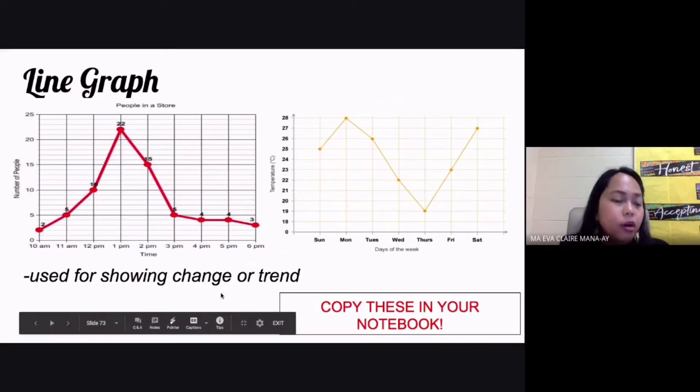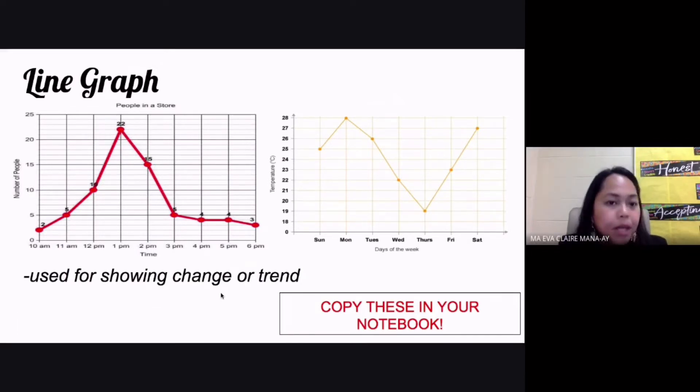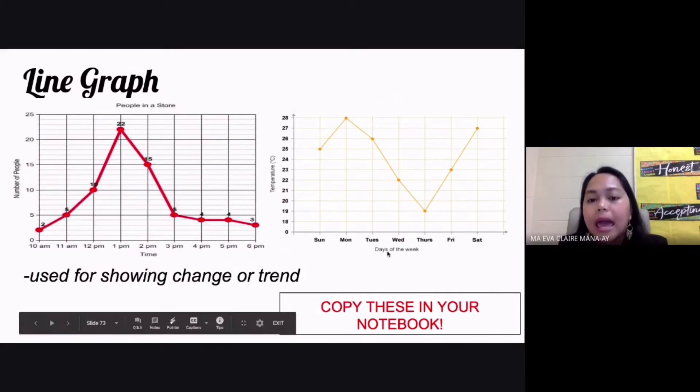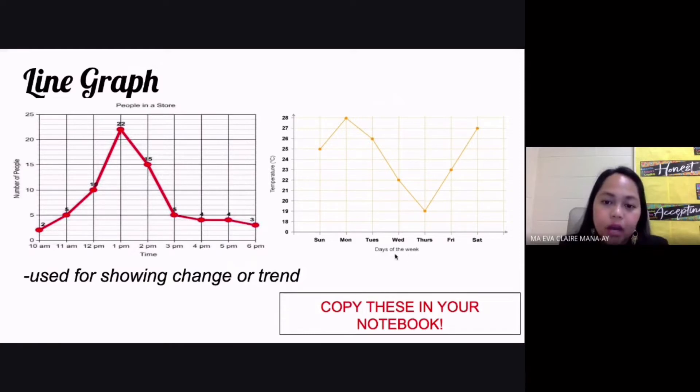For example, you have the number of people in a store and the temperature on the different days of the week. Again, whenever you have a line graph, this is used for showing change or trend.